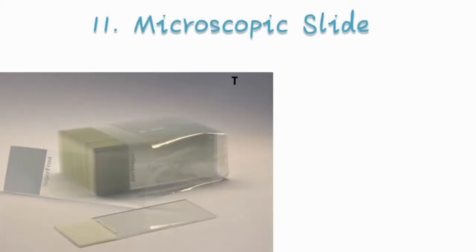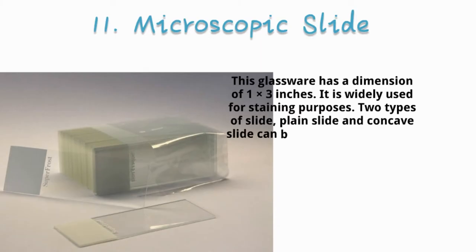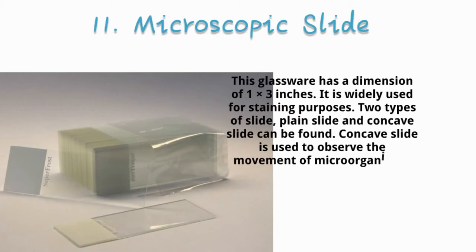Microscopic Slide. This glassware has a dimension of 1 × 3 inches. It is widely used for staining purposes. Two types of slide, plain slide and concave slide can be found. Concave slide is used to observe the movement of microorganisms.